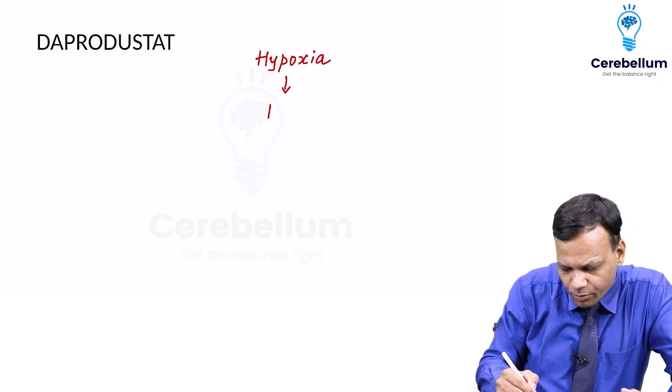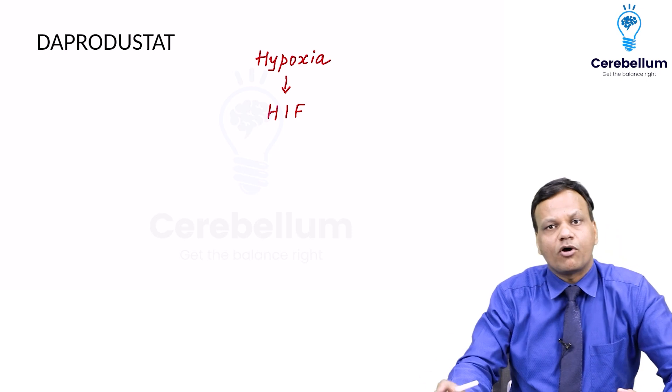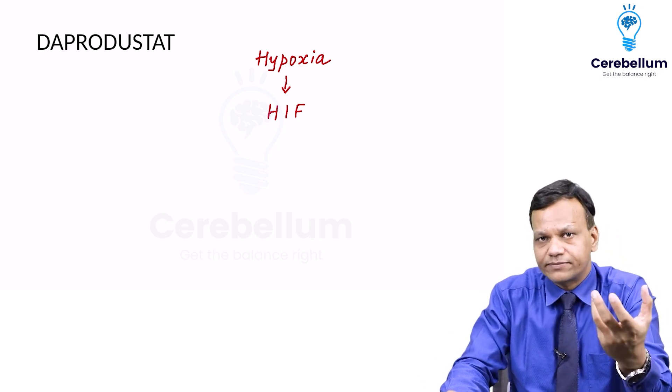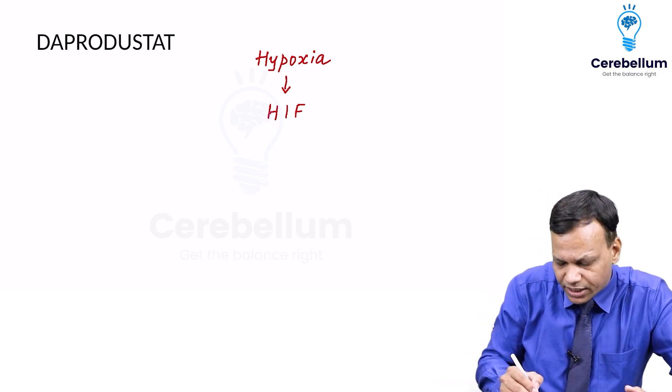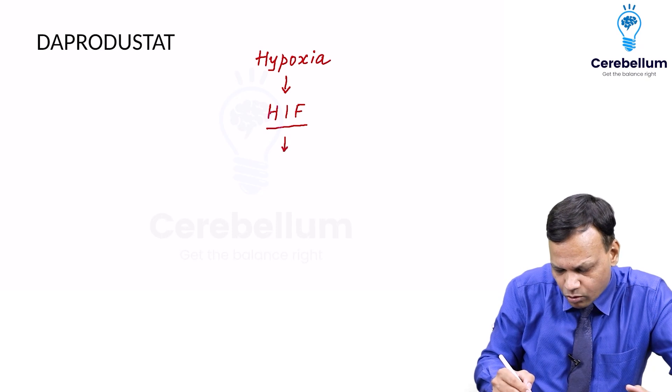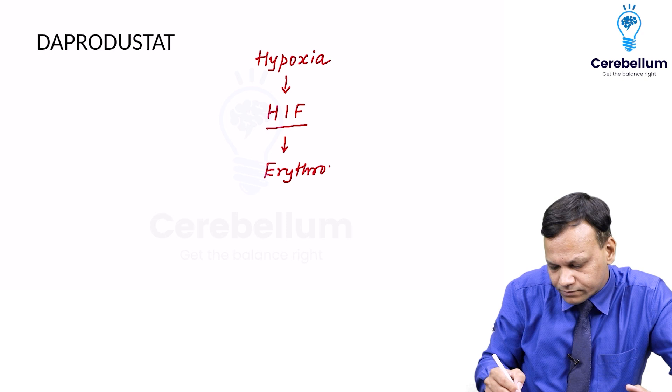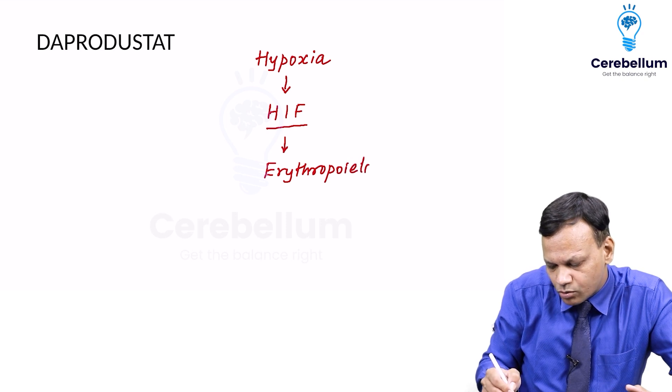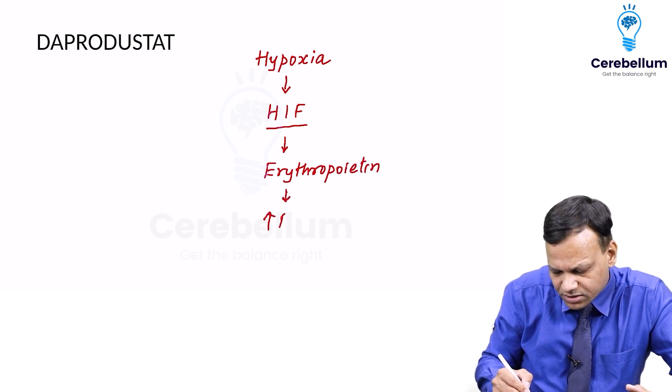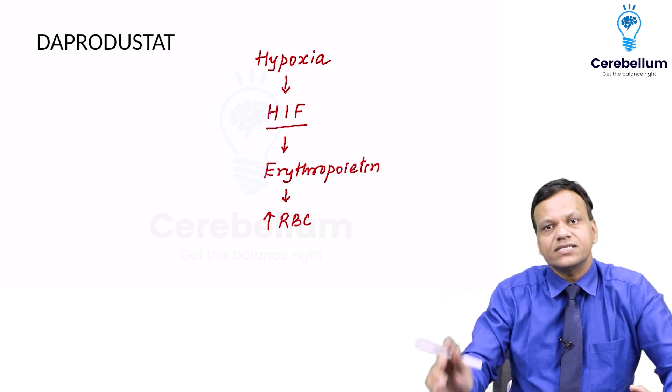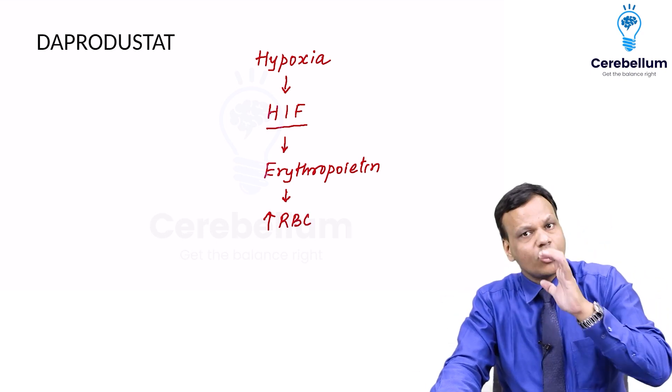Hypoxia will lead to production of a compound called hypoxia inducible factor, or HIF. This hypoxia inducible factor will go to the kidney and start producing erythropoietin. When erythropoietin is produced, that will increase the number of RBCs, so oxygen carrying capacity increases. This is the normal thing.